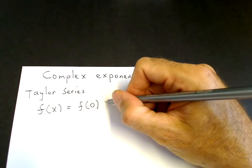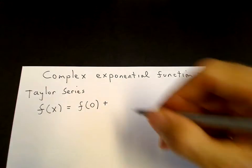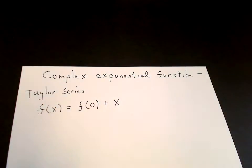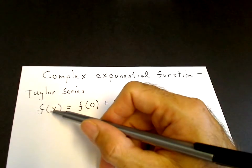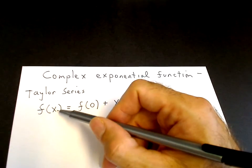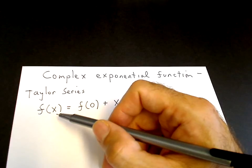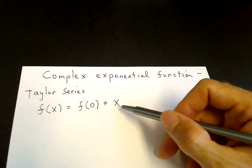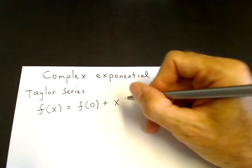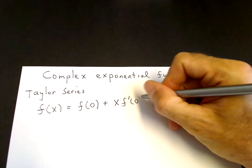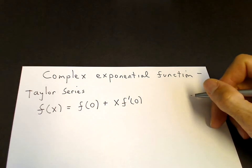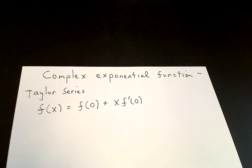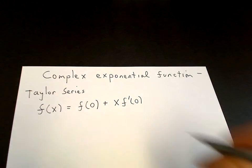The term proportional to x has to match the derivative. When we take the derivative of the left-hand side we get f prime of x, and evaluated at x equals 0 gives us f prime of 0. This equals the derivative of the constant, which is 0, plus the derivative of x, which is 1 — so it has to match f prime of 0.